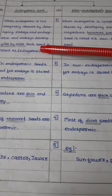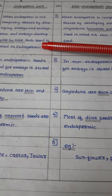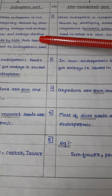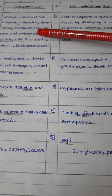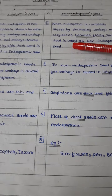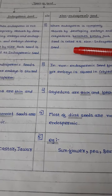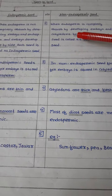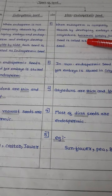When endosperm is not completely absorbed by the developing embryo, such seeds are called endospermic seeds — meaning the endosperm is present in this seed. While in non-endospermic seeds, the endosperm is completely absorbed by the developing embryo, so the endosperm is absent.